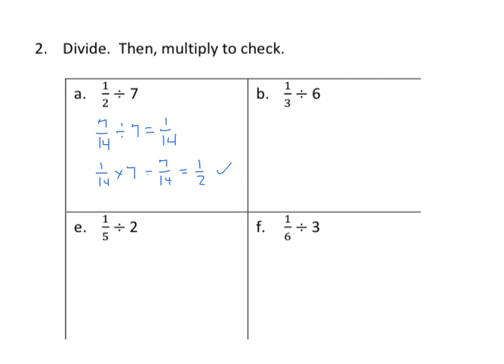Going on to the next one. I have one-third. I want to make an equivalent fraction that's easily divisible by six. So I need a numerator of six. So one times six is six. And three times six is eighteen. And I can easily divide six-eighteenths by six. And that's one-eighteenth. Doing our check, multiply our quotient times our divisor. And I get six-eighteenths. And we can simplify that to one-third. Again, that checks.